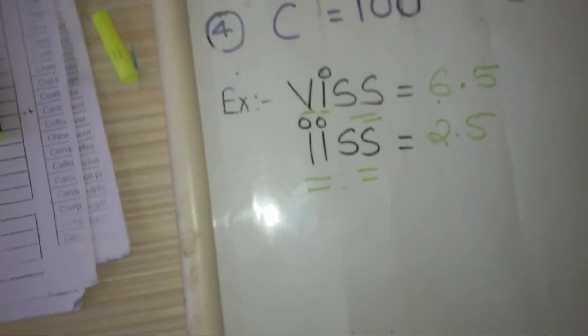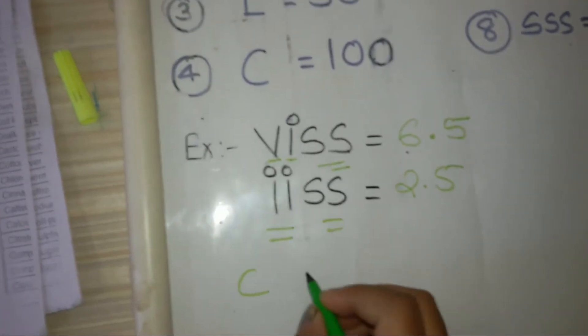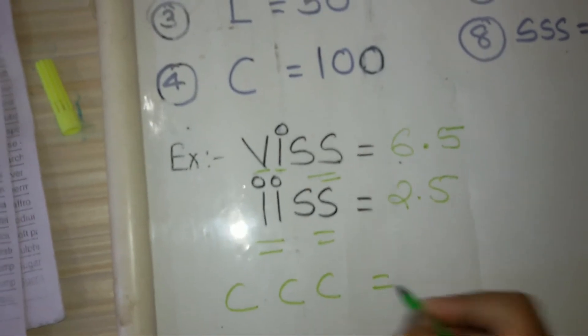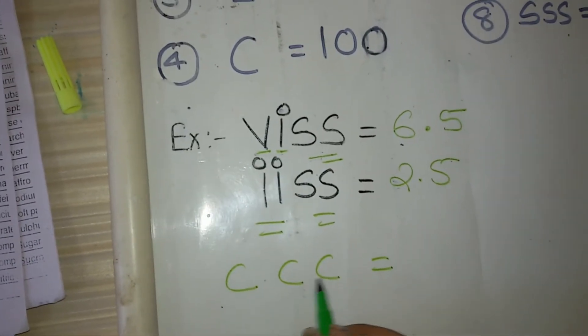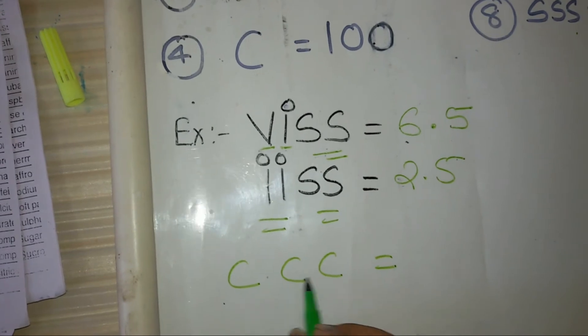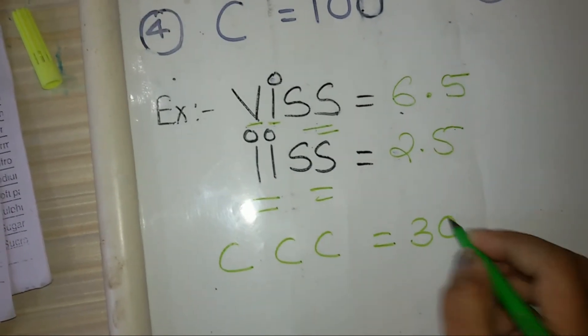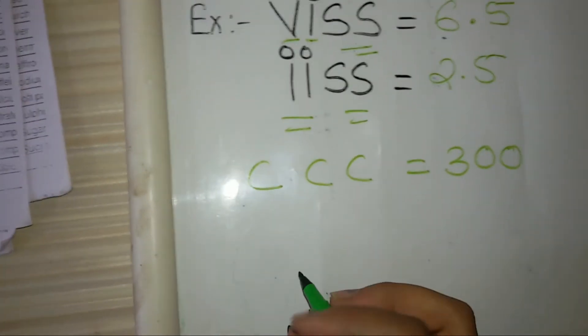Let's solve another example, like CCC. C means 100, so add this: 100, 200, 300. So it is 300.